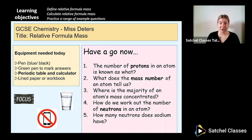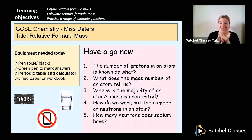Number two: what does the mass number of an atom tell us? Well, it tells us the number of protons and neutrons. Really well done if you've got that correct.